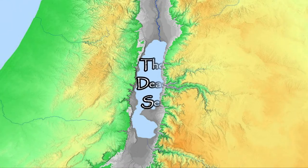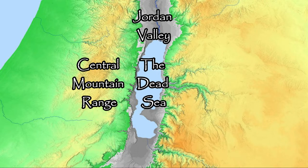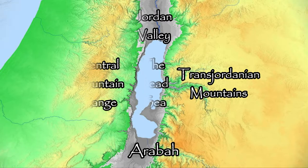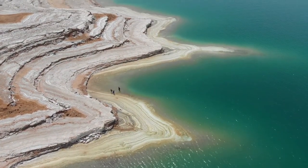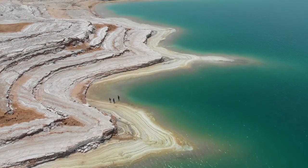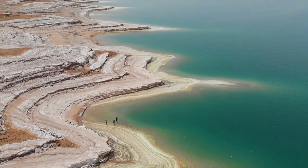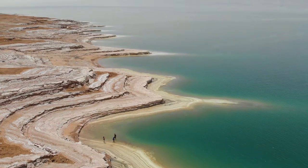The Dead Sea is situated between the central mountain range of Israel to the west, the Jordan Valley to the north, the Transjordanian Mountains to the east, and the Araba to the south. The total length of the Dead Sea is close to 50 miles or 80 kilometers long and about 9 miles or 15 kilometers in width on average.